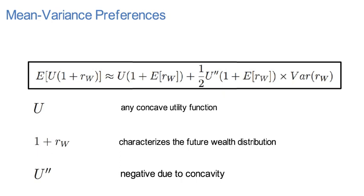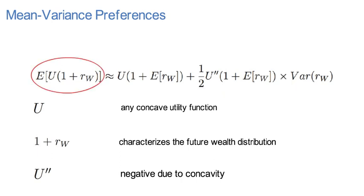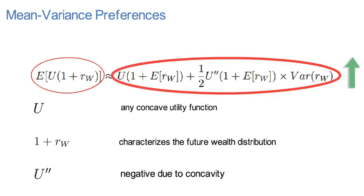Markowitz and Levy basically showed that an investment strategy that maximizes an investor's expected utility is approximately the same strategy that maximizes the return that the investor receives on average for a given level of variance.